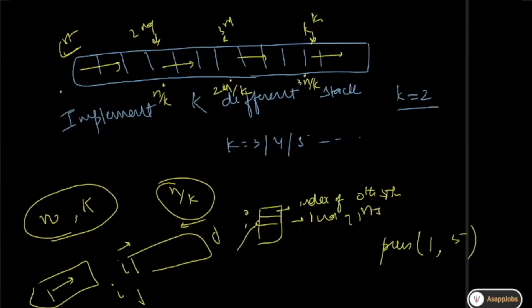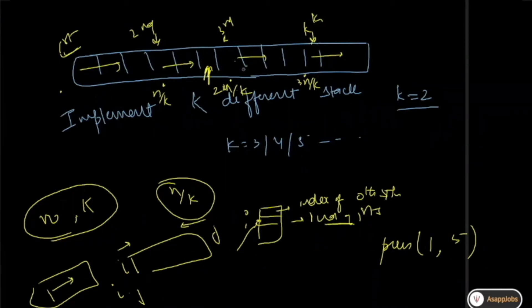You go into the index array and look up the current moving index of stack one. You get that index, and then you check whether the next value of this index is the starting point of the next stack. If that is the case, it means the stack is already full and you cannot do anything. If it is not full, then you go and insert the data five there, and then increment the value of that index.